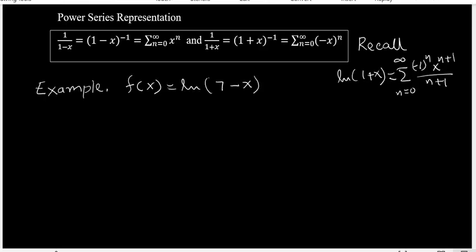We are now looking for the expansion of natural log of 7 minus x. We recall the formula for natural log of 1 plus x, which is negative 1 to the n, x to the n plus 1 over n plus 1. That one we have derived already from the integration of 1 over 1 plus x, as you remember.